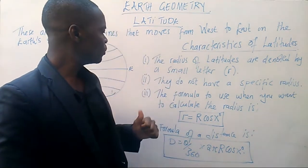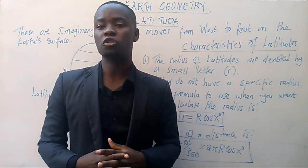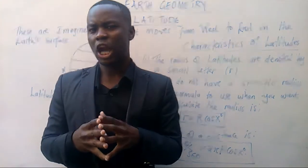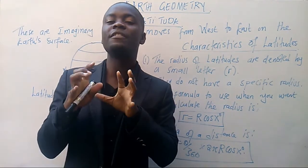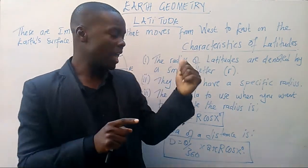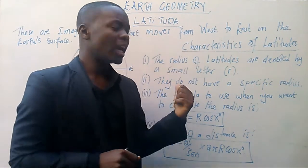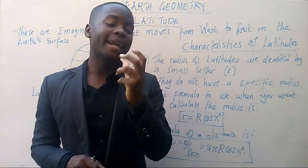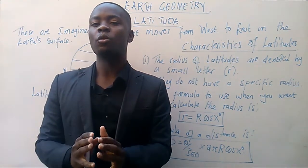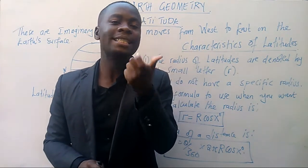And then two, they do not have a specific radius, which is also true. Latitudes do not have a specific radius, despite longitudes having a specific radius. This means that we need to calculate the value of the small letter r. We need to calculate the value of radius in latitudes.